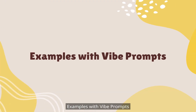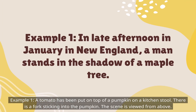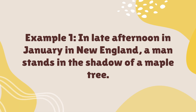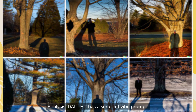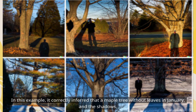Vibe prompt Example 1: A tomato has been put on top of a pumpkin on a kitchen stool. There is a fork sticking into the pumpkin. The scene is viewed from above. DALL-E 2 has a series of vibe prompts. In this example, it correctly inferred a maple tree without leaves in January, and the shadows.